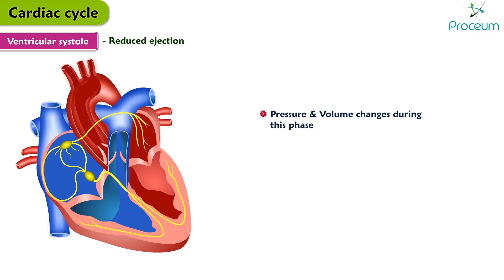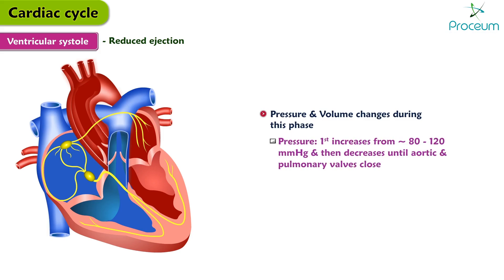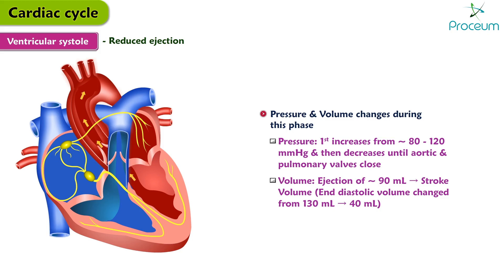Pressure and volume changes during this phase: pressure increases first from about 80 mmHg to 120 mmHg, then decreases until the aortic and pulmonary valves close. A volume ejection of about 90 mL — called the stroke volume — occurs during this phase, and the end-diastolic volume of 130 mL has now changed to 40 mL of end-systolic volume.